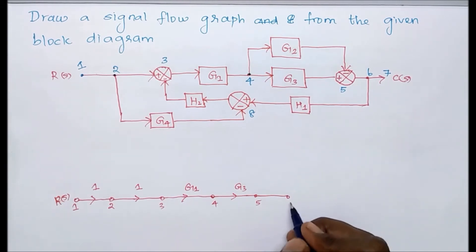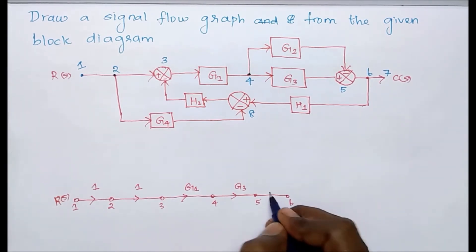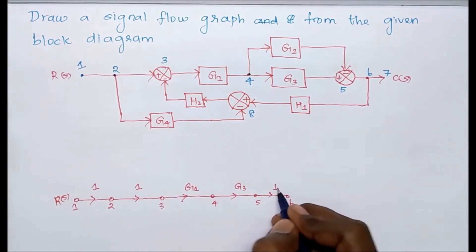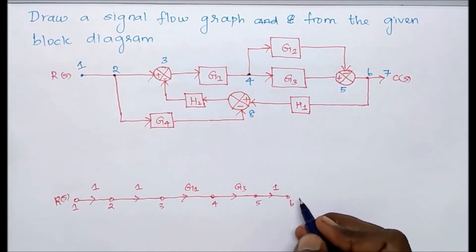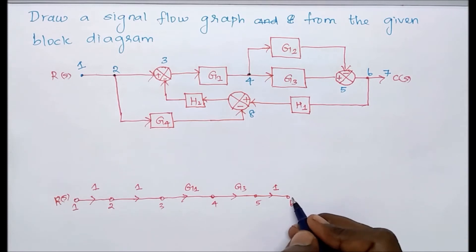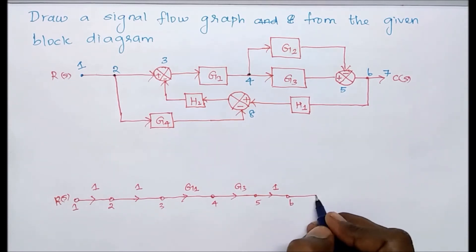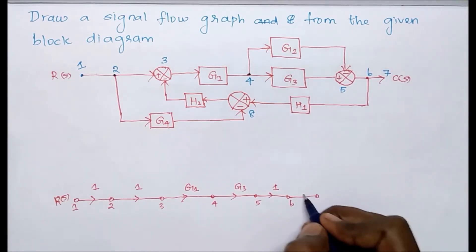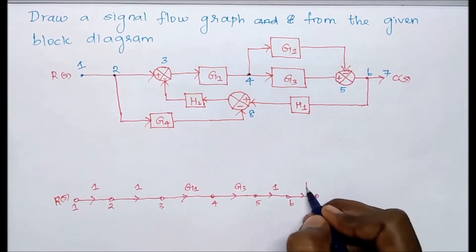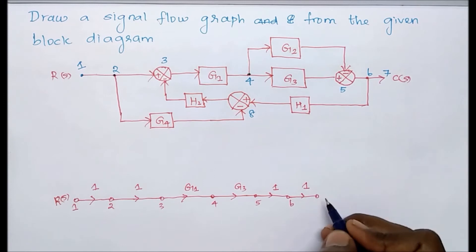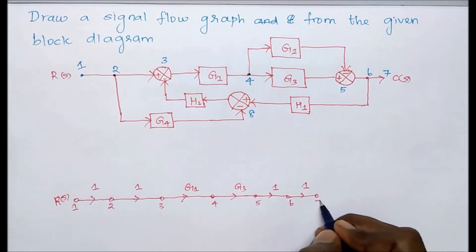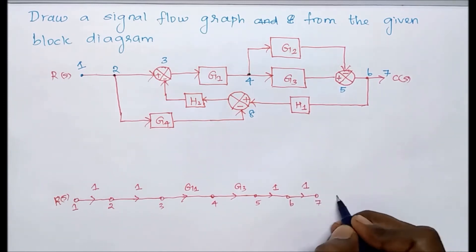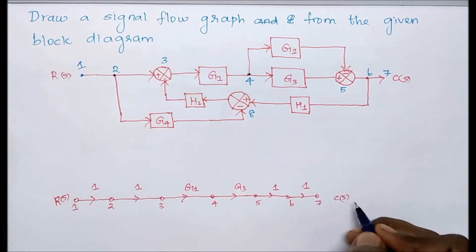From node five to six, there is no specific gain, so it has unity gain. From node six to node seven, there is also no specific gain, so this is also unity gain. Node seven is the output node, C(s).